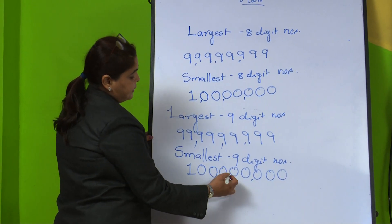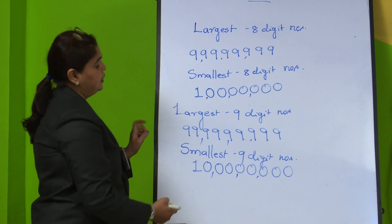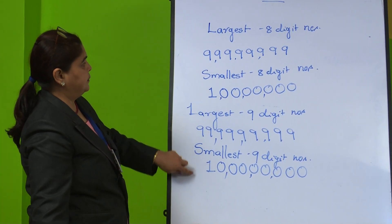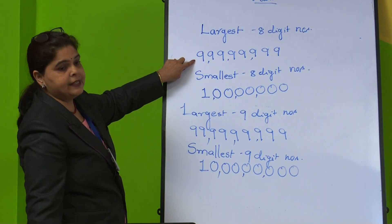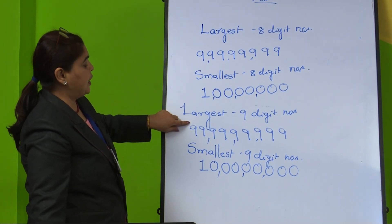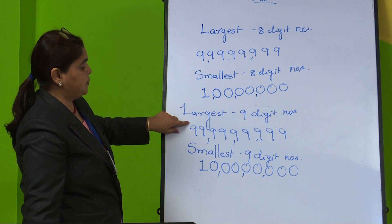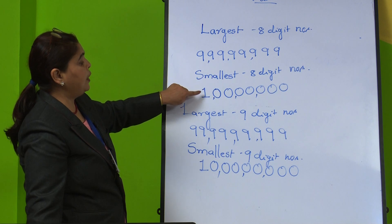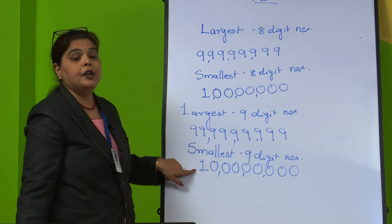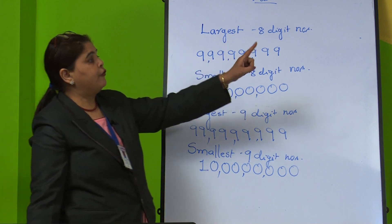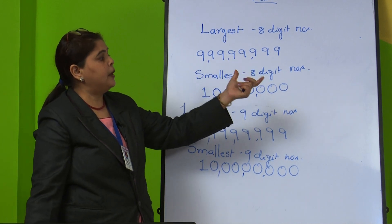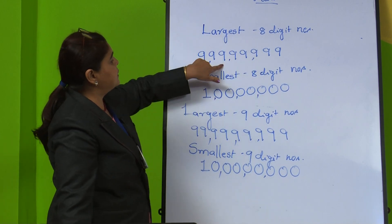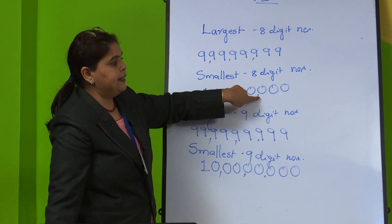We write 1 followed by eight 0s — that is the smallest 9-digit number. The difference is: in an 8-digit number we get up to 9 crores, and in a 9-digit number we get 99 crores. For the smallest, 8-digit gives 1 crore and 9-digit gives 10 crores. Just see the number of digits — 8 or 9 — and write the largest and smallest accordingly.